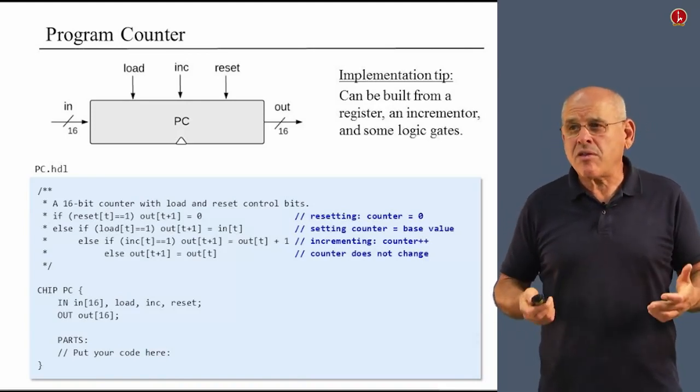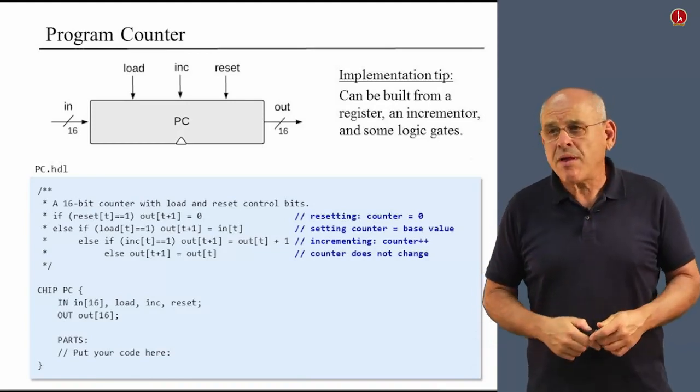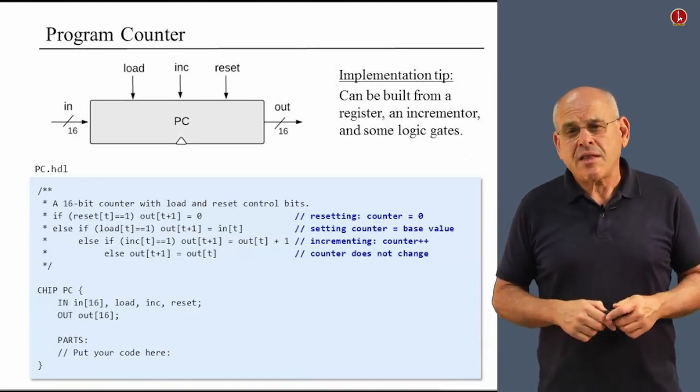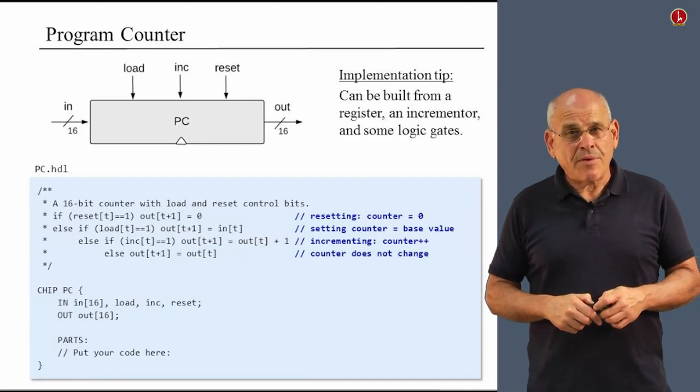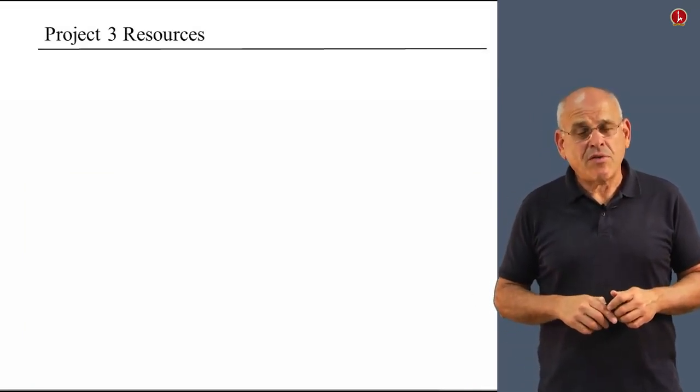So what you have to do is to come up with the right functionality, the gate logic that affects every one of these four operations. It turns out that you can do it using a register chip, an incrementer chip, and a bunch of other logic gates that were previously described. So taken together, this is what you have to do in project three.